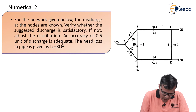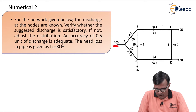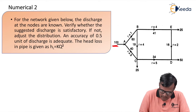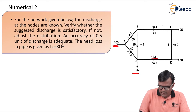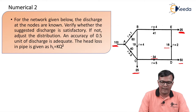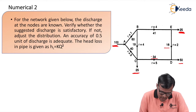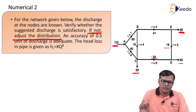For the network given below, discharges at the nodes are given. At this node, a discharge of 100 is coming in; 60 is going out; 40 is coming into point A; 41 is going out. The R value is 4 and 19 is going out; 25 is going out; 34 is flowing from C to D; 16 is flowing from E to D; at E, 25 is going out; and at D, 50 is going out. The discharges to be calculated are already suggested. We have to verify whether these discharges are correct or not, and if not, adjust the distribution.